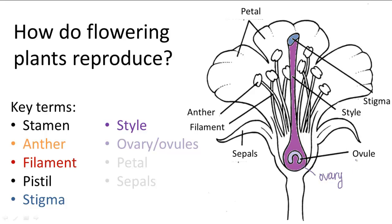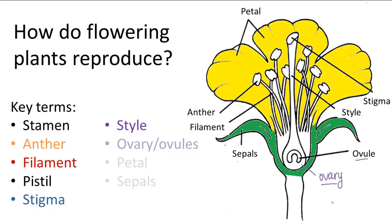So don't get ovule and ovary confused. The ovary contains the egg and is what will eventually become the fruit to protect the seed. Notice how both the male and female reproductive organs reside together in the same flower. The petals surround and protect both reproductive organs as well as attract insects and other pollinators. And the sepals formally protected the flower bud.